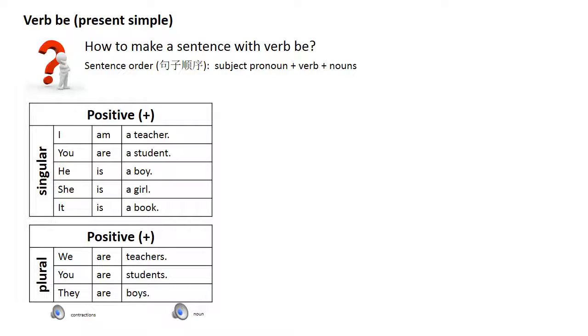How to make a simple sentence with the verb be. You use subject pronoun plus verb plus a plus noun. Example: I am a teacher, you are a student, he is a boy, she is a girl.